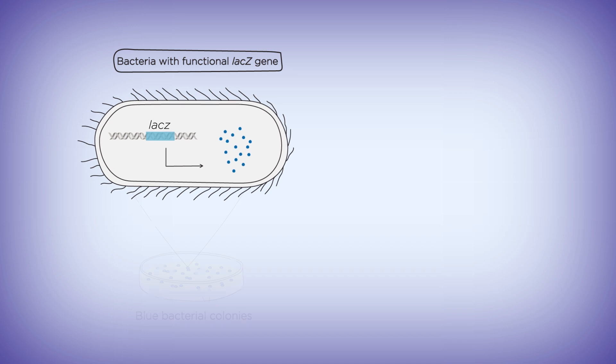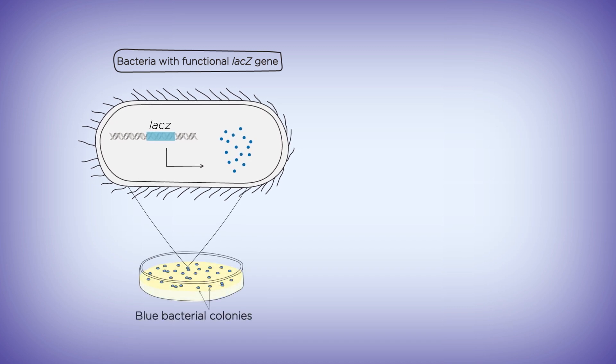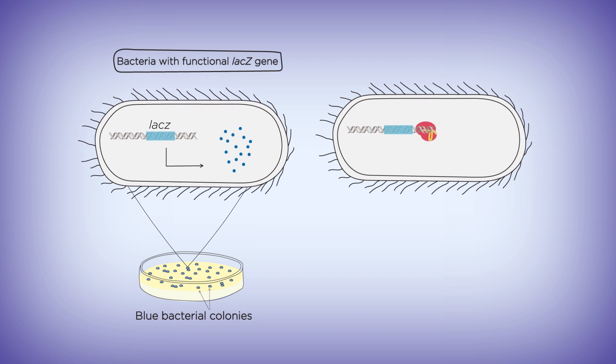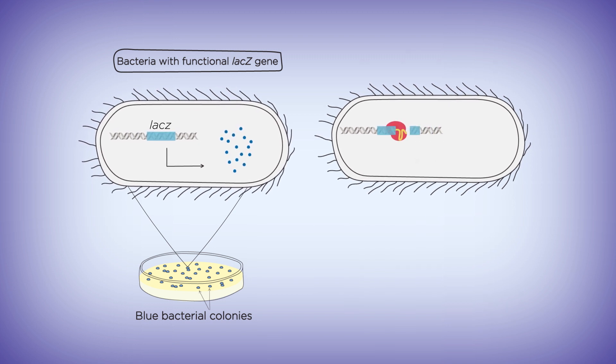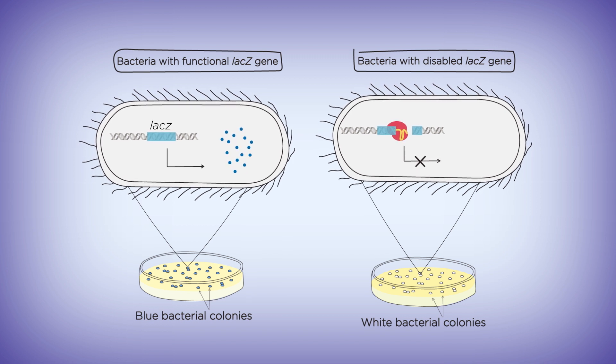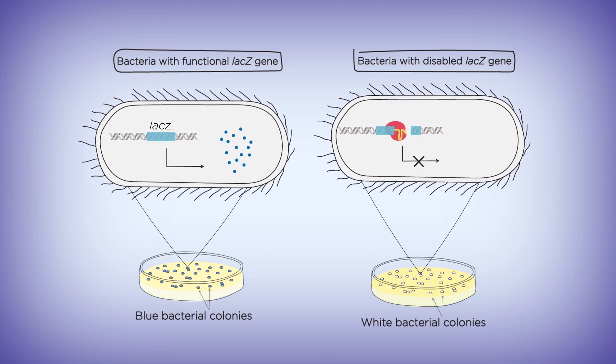Bacteria that contain a functional LacZ gene will form blue colonies on agar plates that contain this chemical. The knockout lab uses the CRISPR-Cas system to disable LacZ, resulting in white colonies. This gives you a clear readout of whether or not your experiment was successful in knocking out the LacZ gene.